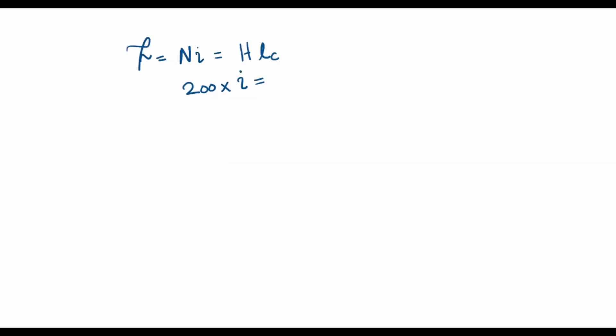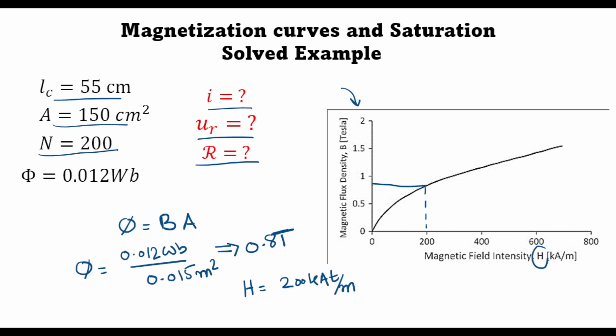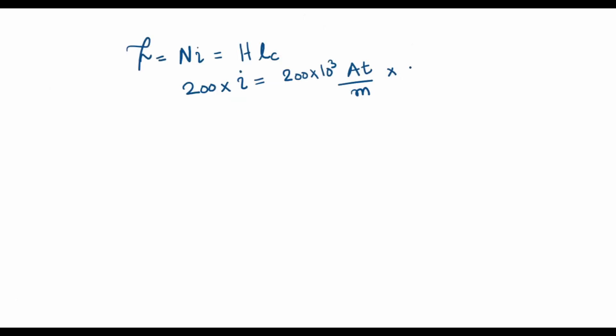The magnetic field intensity I just found out as 200 kilo ampere turns per meter. So it's always good to put in the units as well: ampere turns per meter times the mean path length which is 0.55 meter. And this is also 200 turns, so I can cancel out these.